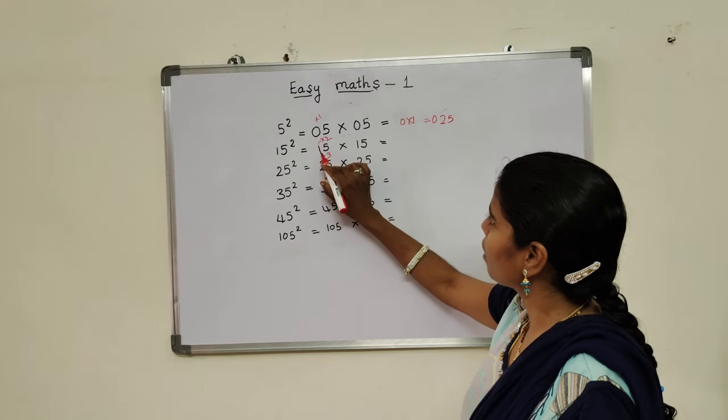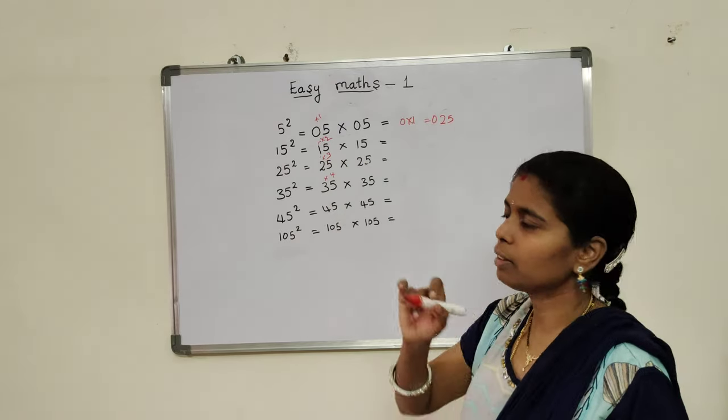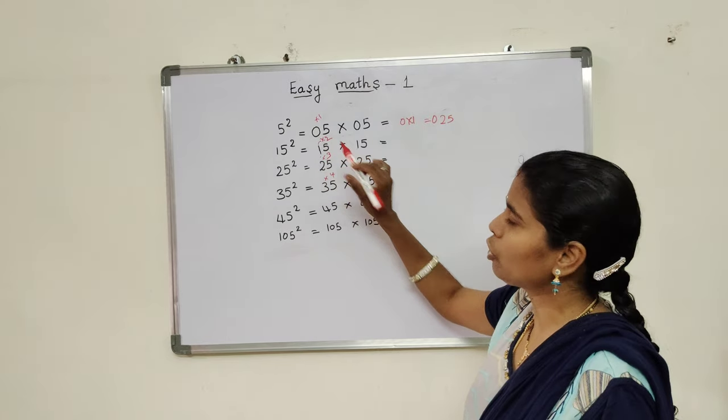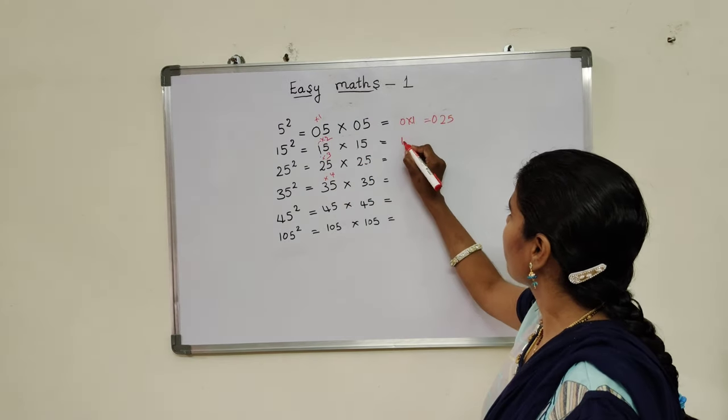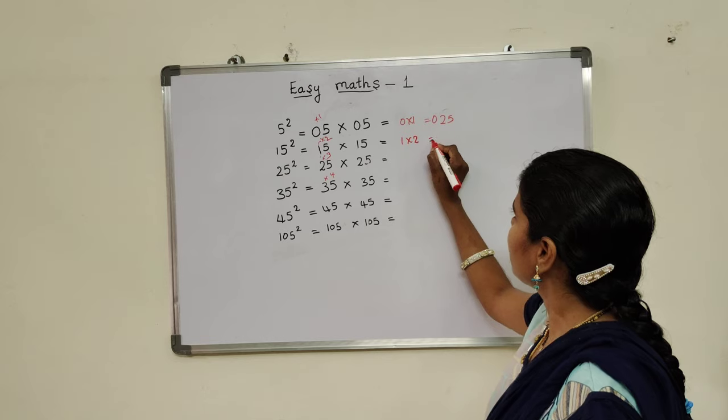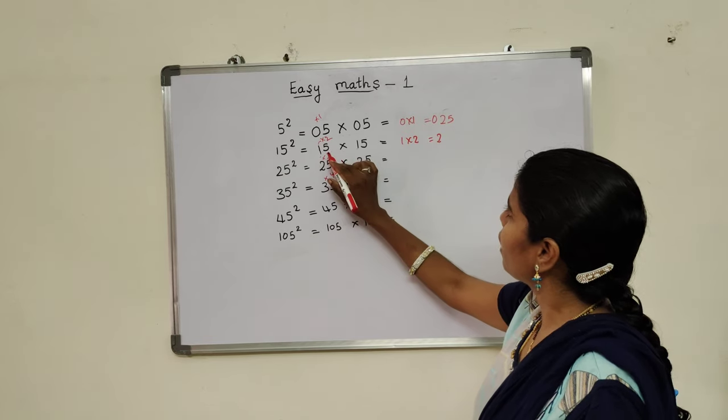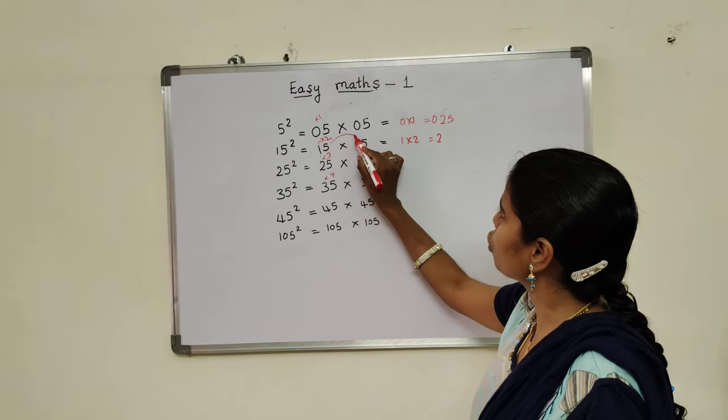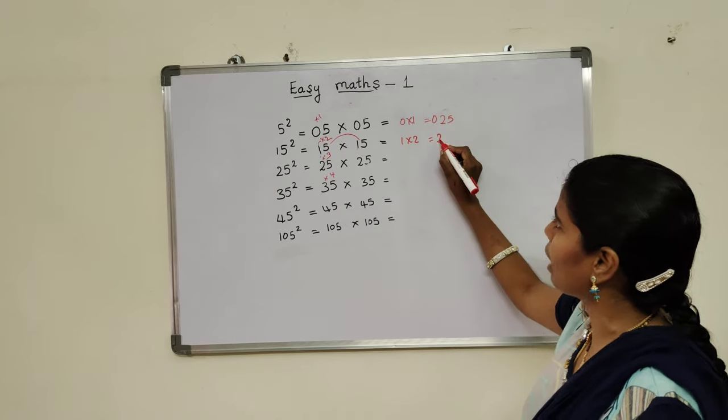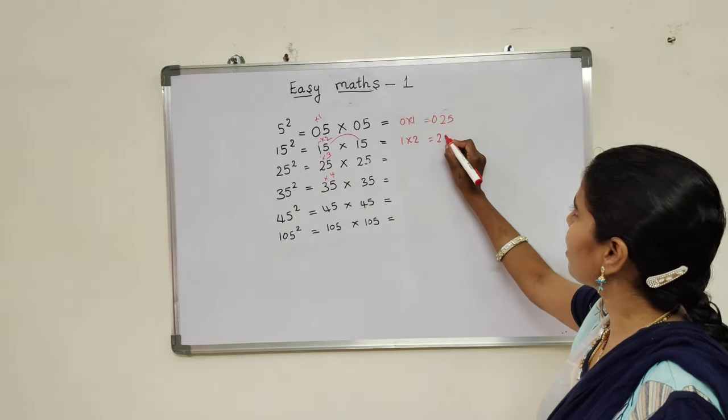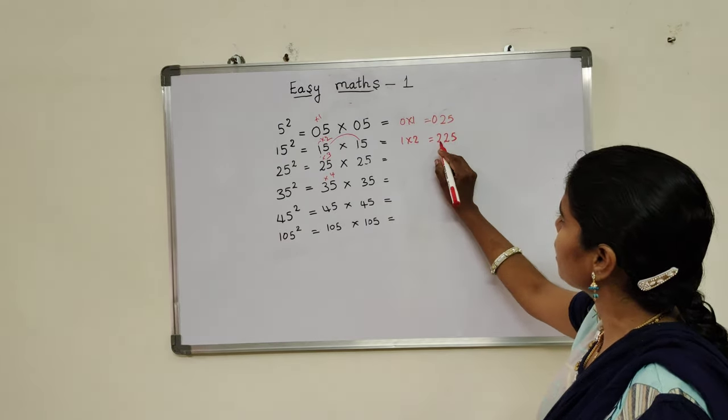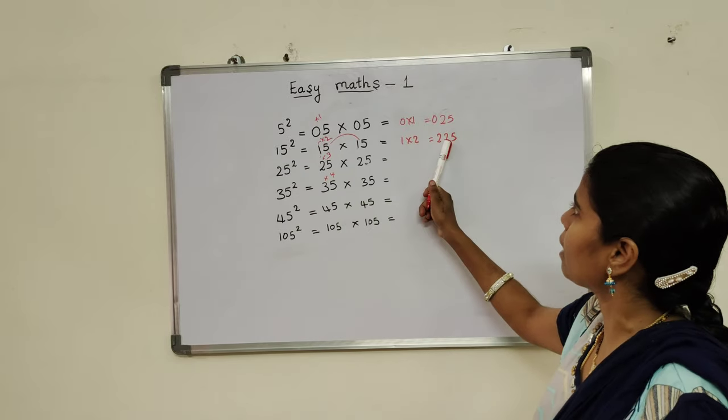Next, 15 square. More than 1, one number is high, that is 2. 1 into 2 is 2. And 5 fives are 25. Simply you should multiply again 5 fives. This is the 15 square answer: 225.